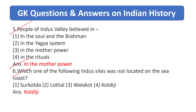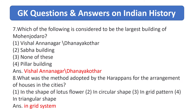Which one of the following Indus sites was not located on the sea coast? Answer is Kotdiji. Which of the following is considered to be the largest building of Mohenjo-daro? Answer is the Great Granary.